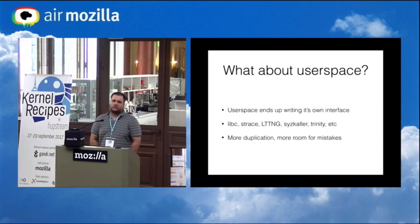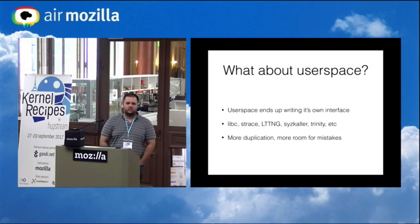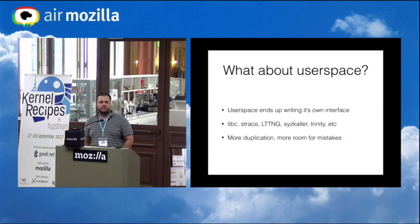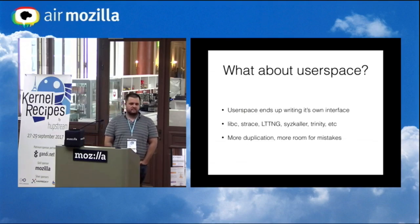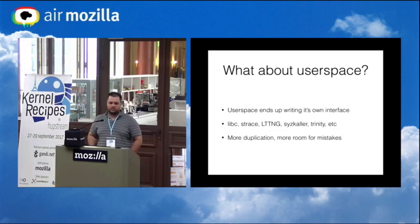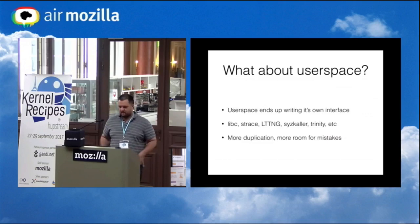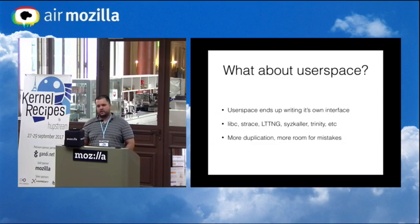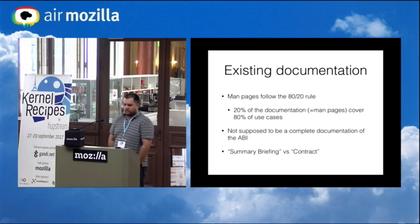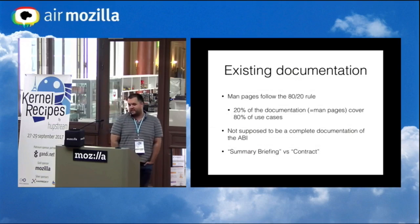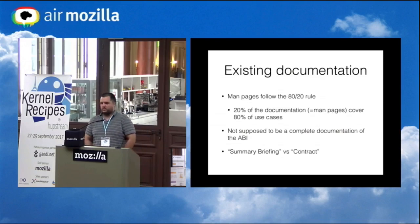User space has its own problems with this model. Because we don't expose anything standard from the kernel, different user space libraries each have their own ABI implementation — glibc, QEMU, strace, Trinity, various fuzzers. Each of them has a library describing how system calls and ioctls look, and each of them has errors and mistakes. We have a bunch of implementations, each wrong in its own way, instead of one we know works. We also have man pages, which are great for development — I'd say 95% of cases are covered.